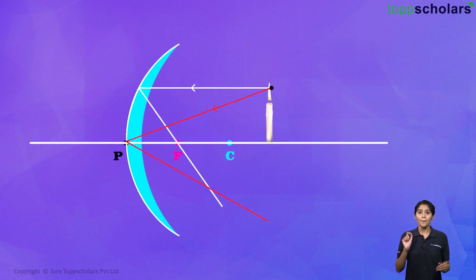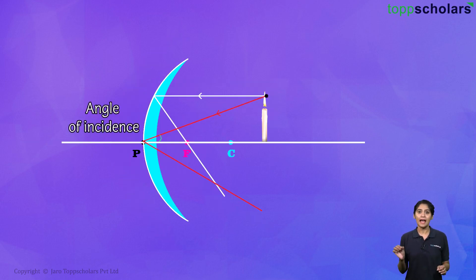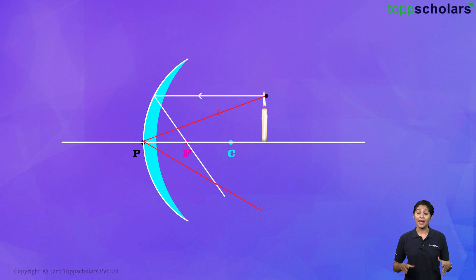Because now it originates from here. So the angle of incidence at the pole has increased. And as a result, the angle of reflection will also increase. So the reflected ray will go somewhat like this, right? And as a result, the rays are now intersecting at this point.